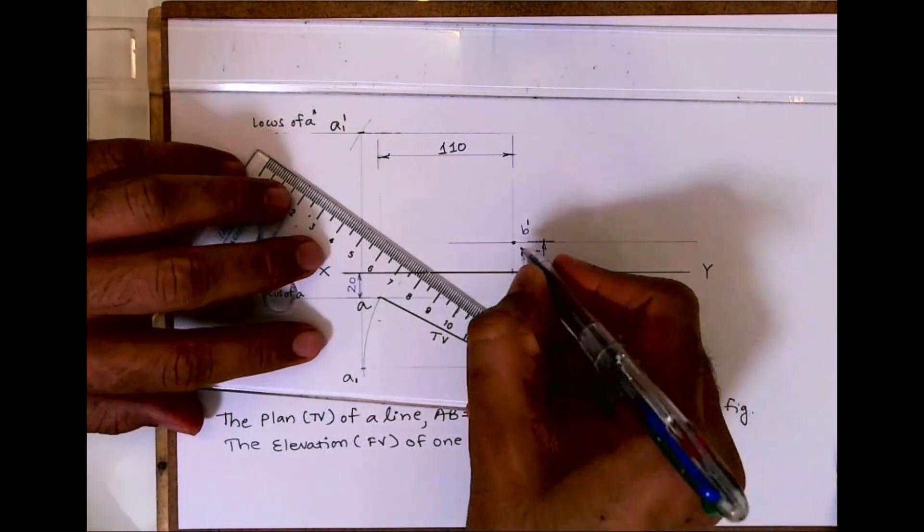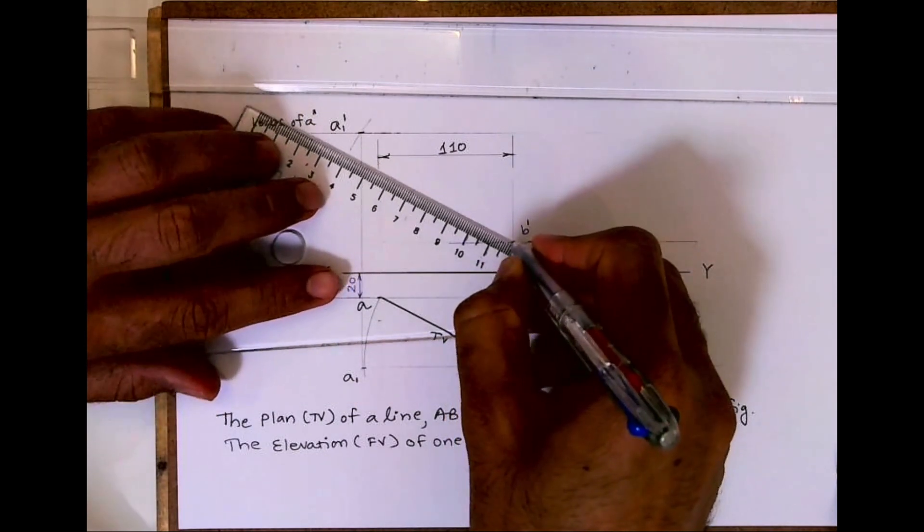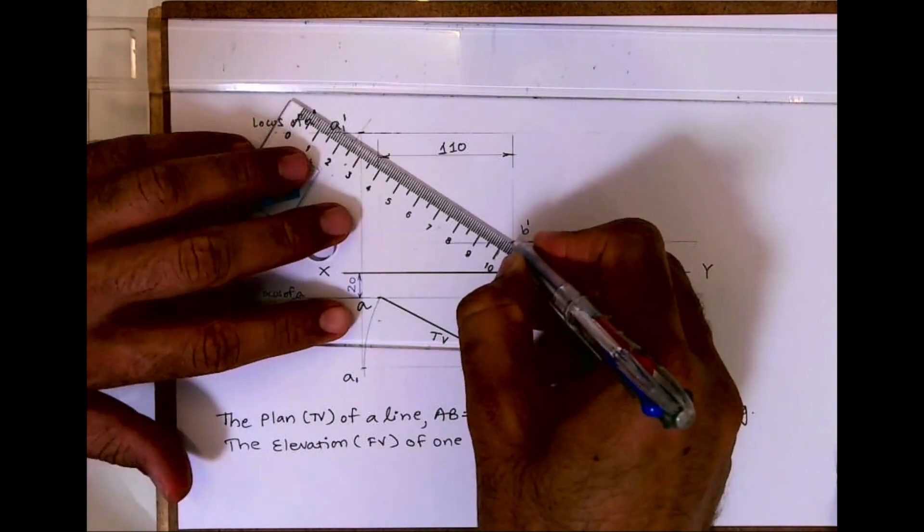So I'm drawing A dash A1 dash, A1 dash B dash. So this is true length.